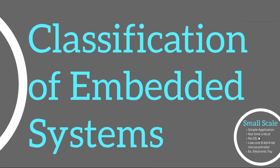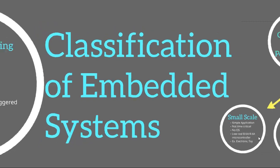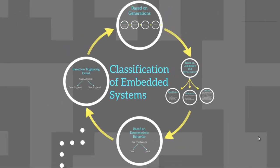Because of the huge diversity in embedded systems, the classification can be done in several ways. We'll look at four ways: based on generations, based on complexity and performance, on deterministic behavior, and finally based on triggering events.